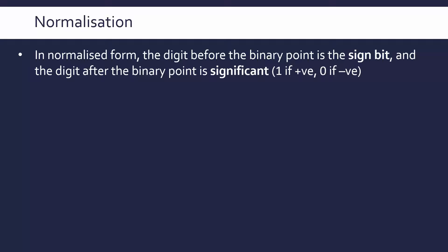And when it's normalised, the digit after our binary point needs to be significant. So I'm sure you've heard of significant digits, which in binary means it's either a 1 if it's a positive number, or a 0 is significant if it's a negative number.